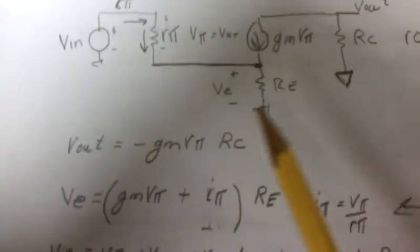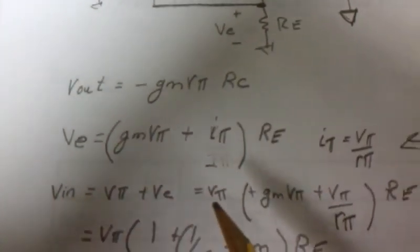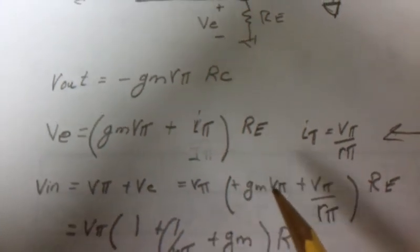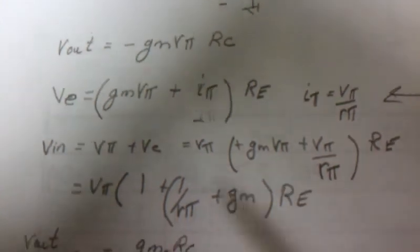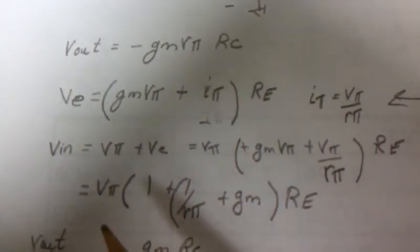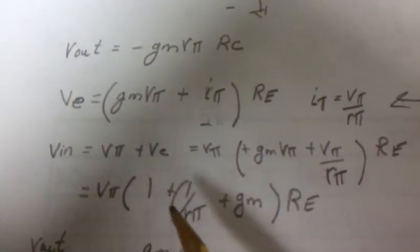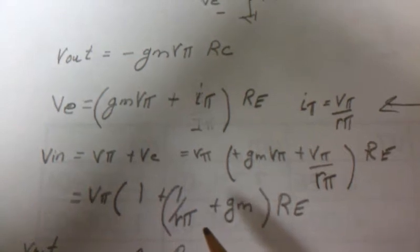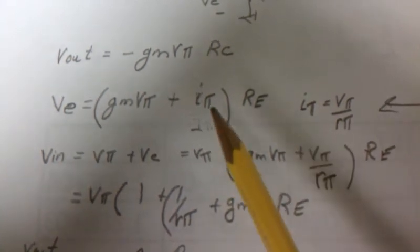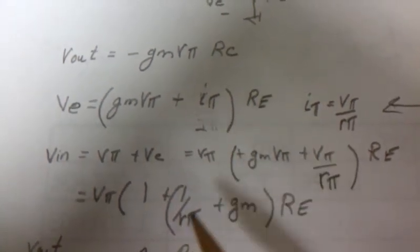Equals V pi plus GM V pi divided by r pi times RE. Simplifying, we get V pi, we get this equation here. Now again if we had set this to zero, this term would have dropped out.